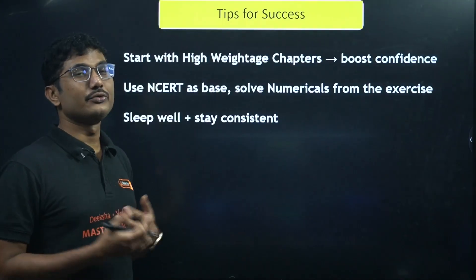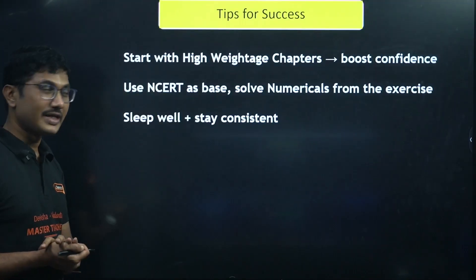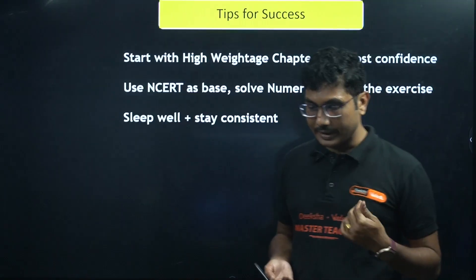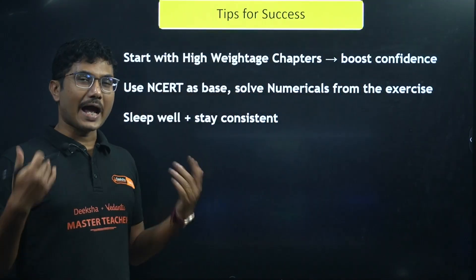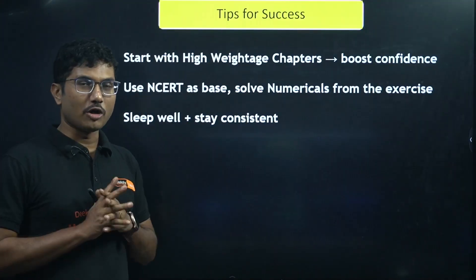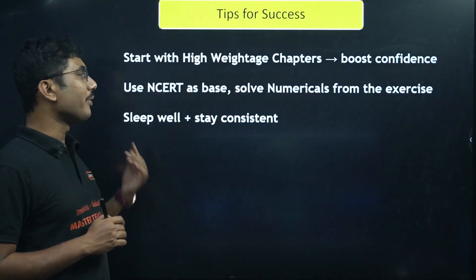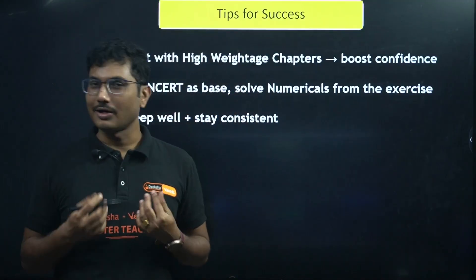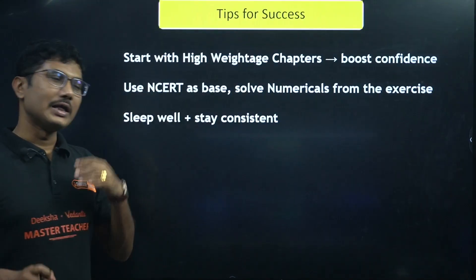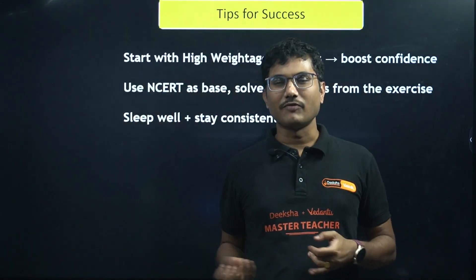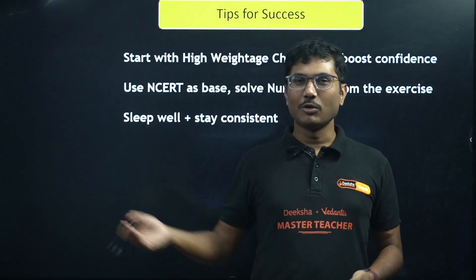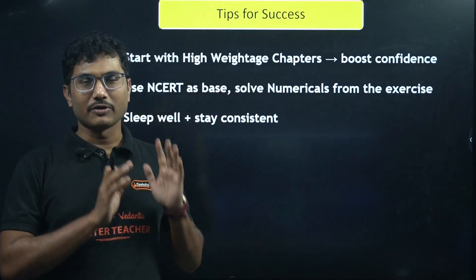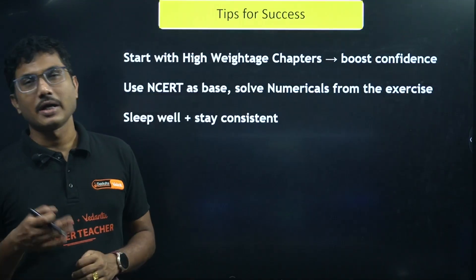Here are some tips for success. Start with the high-weighted chapters — I have told you four to five chapters which are very high-weighted. Use NCERT as your base and solve numericals from the exercise. If you want to score 70 out of 70, solve all the numerical questions in your NCERT textbook. Sleep well and stay consistent. Consistency does not mean studying very hard one day and sleeping all the next day — it means fixing your study hours, studying for the same amount of time every day, and sleeping on time.